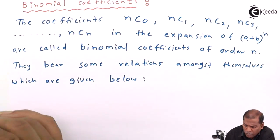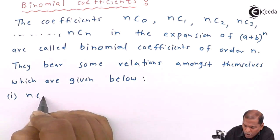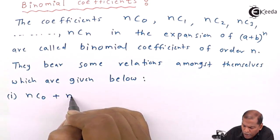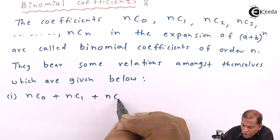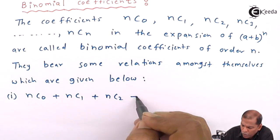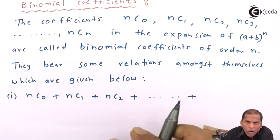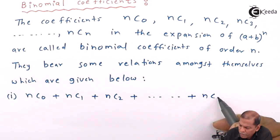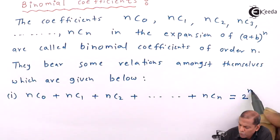Result number one is: nC0 + nC1 + nC2 + ... + nCn = 2^n.